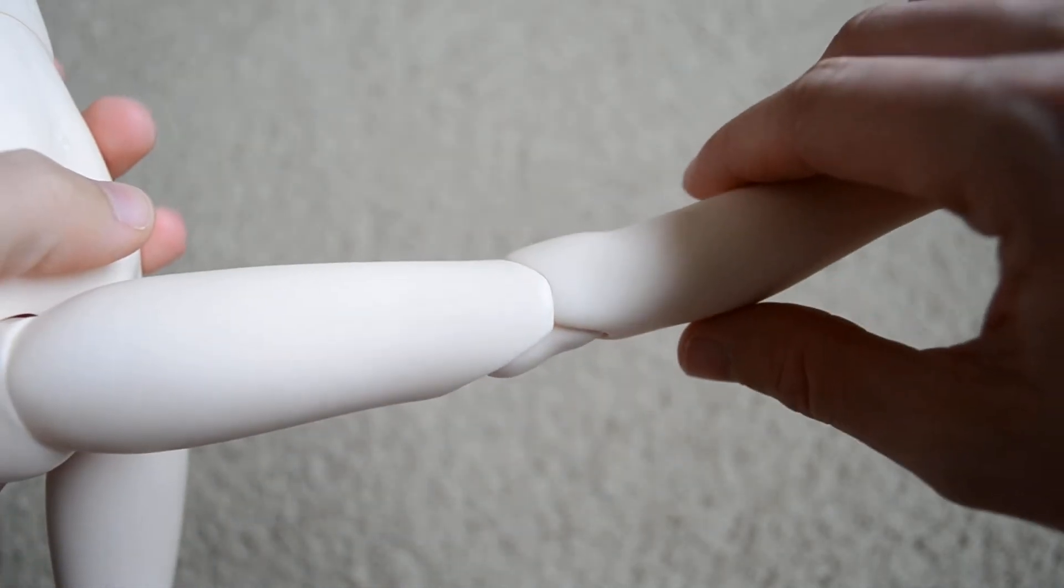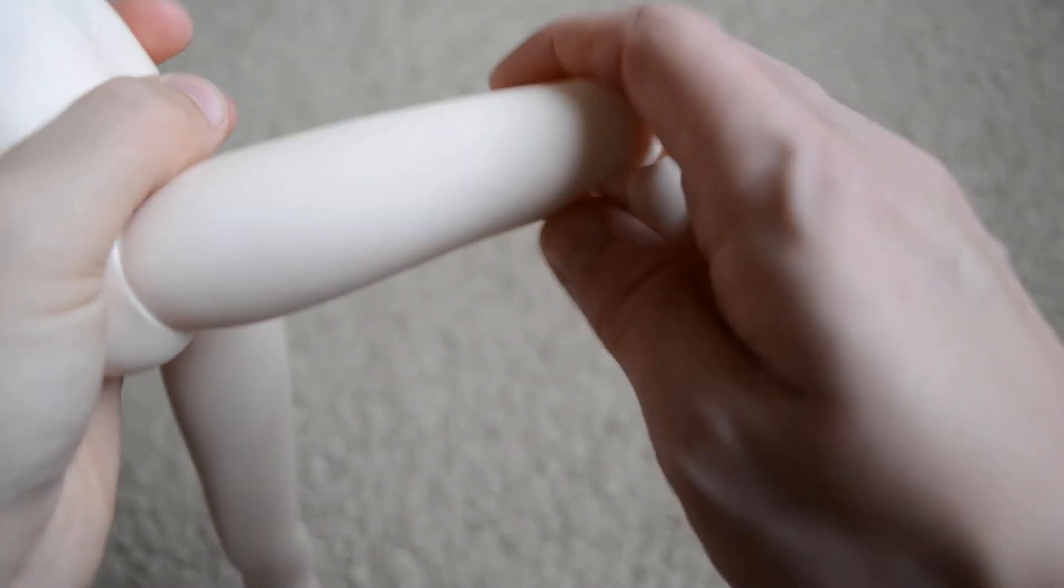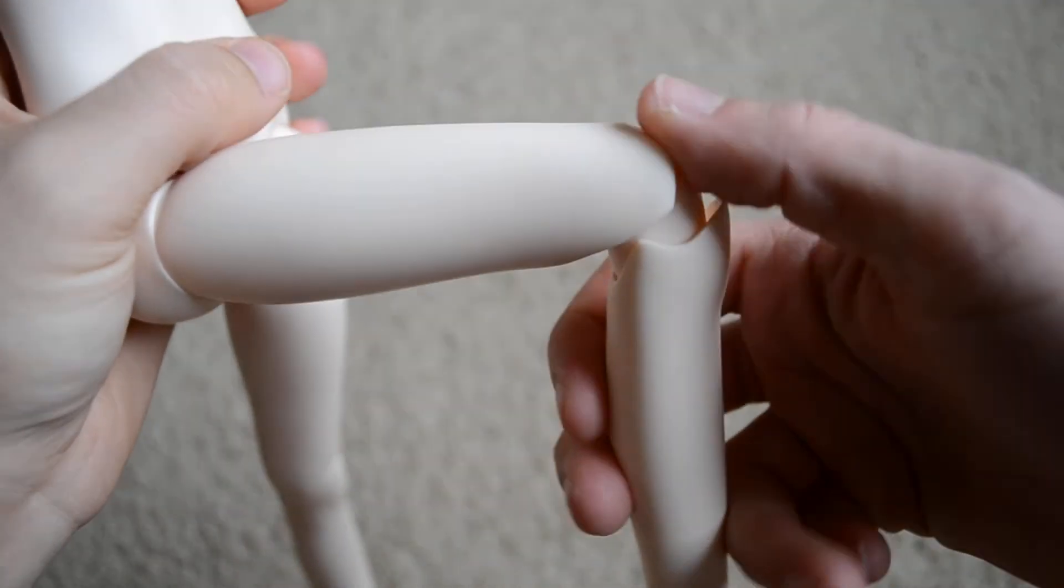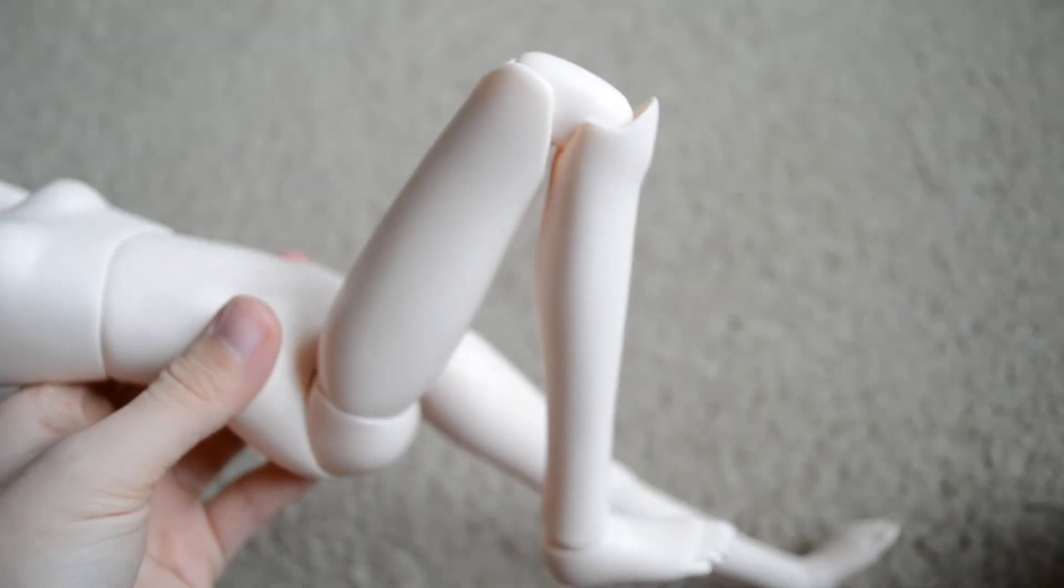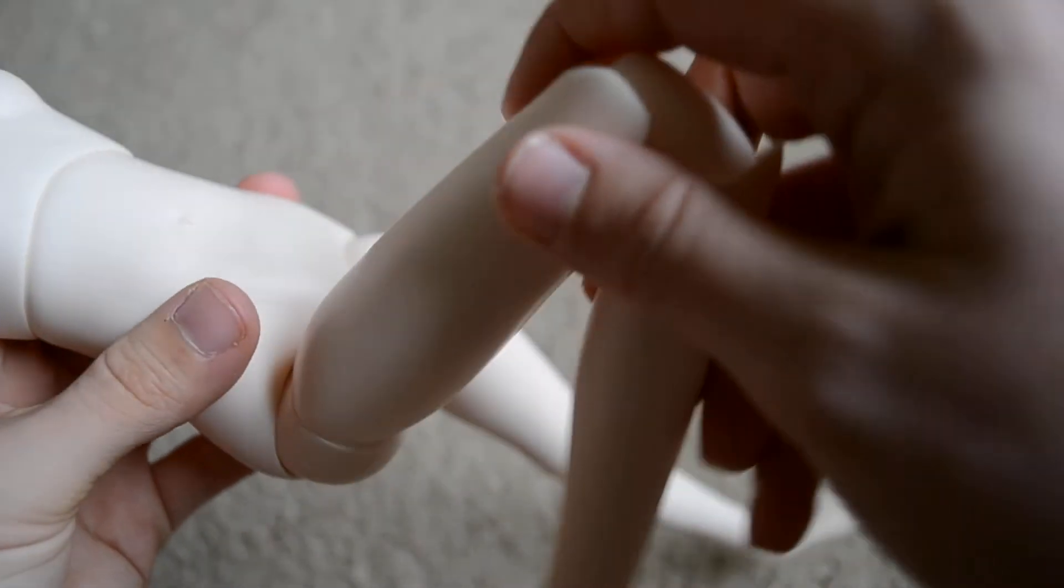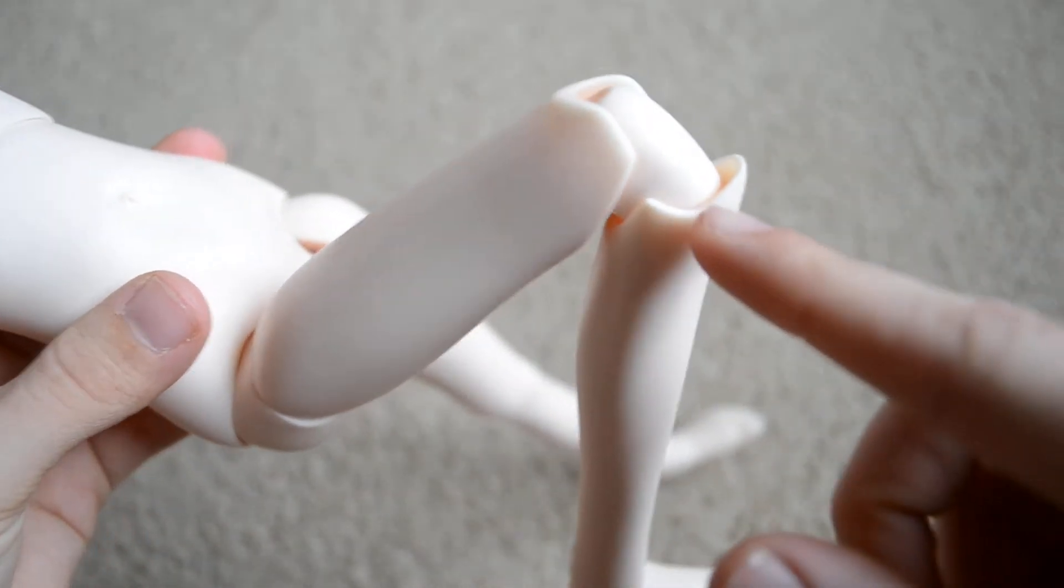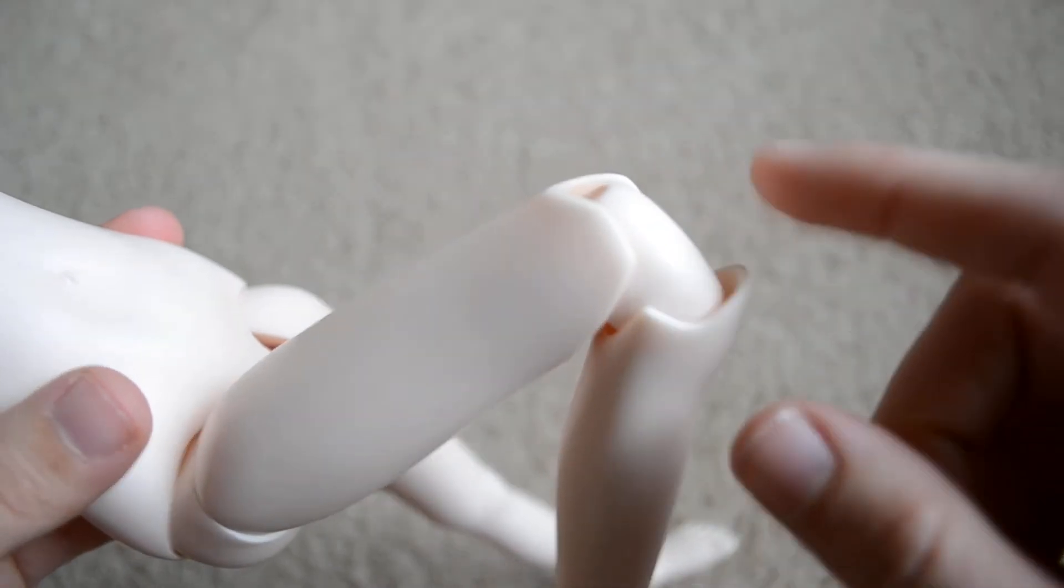Her knees are double jointed, they have a peanut piece in there, so you can move it 90 degrees or all the way, so that's good. This piece kind of juts out here, but other than that, it looks pretty good too.